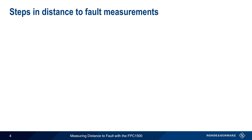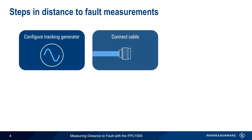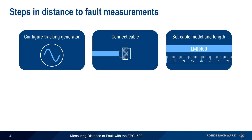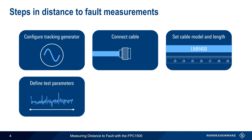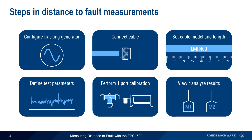There are six basic steps in making distance to fault measurements: configuring the tracking generator, connecting the cable, setting the cable model and length, defining the measurement parameters, performing a one-port calibration, and viewing and/or analyzing the results. In the remainder of this presentation, we'll go through each of these step by step.